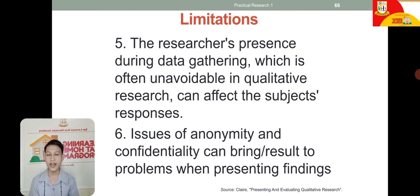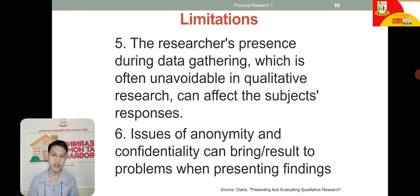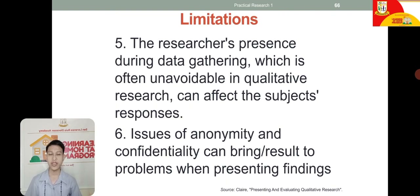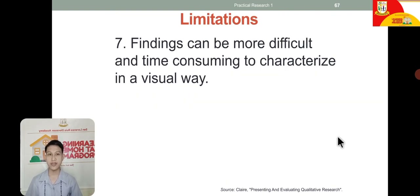Sixth, issues of anonymity and confidentiality can present problems when presenting findings. For example, if you describe a subject's abilities or attitudes in detail, people who know someone like that might be able to identify them, so the anonymity of participants may be compromised. Seventh, findings can be more difficult and time-consuming to characterize in a visual way.